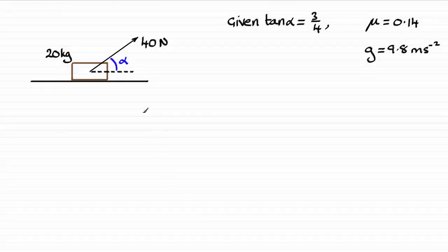So for this question then, what I've just done is sketch what we're given. That is our particle, mass of 20 kilograms, we've got this force of 40 newtons acting on it at an angle alpha where tan alpha is three quarters.